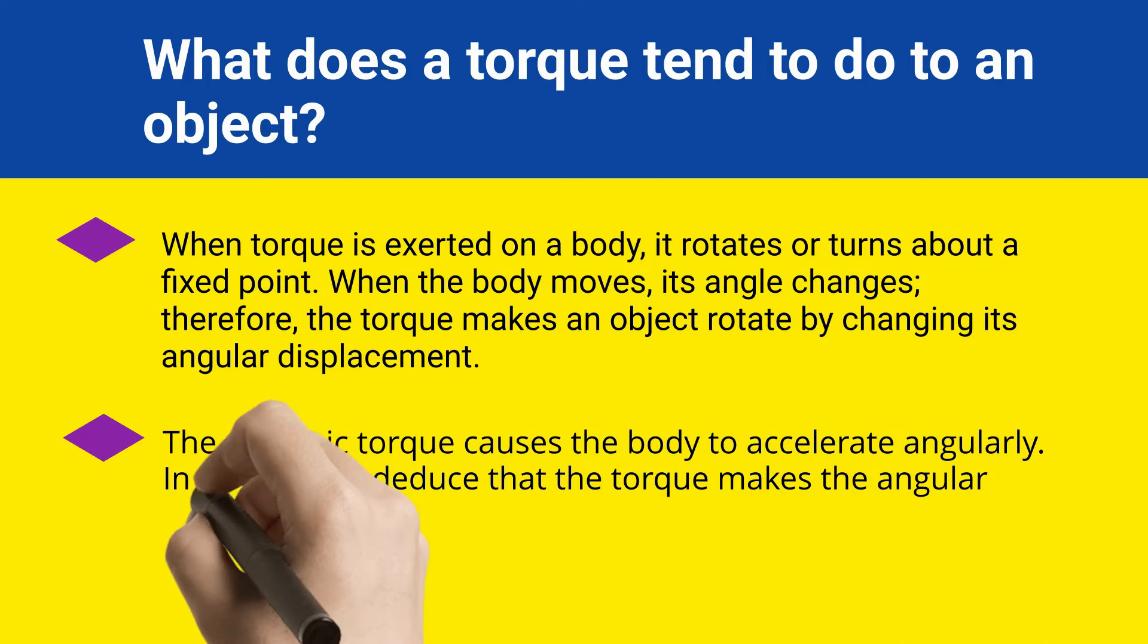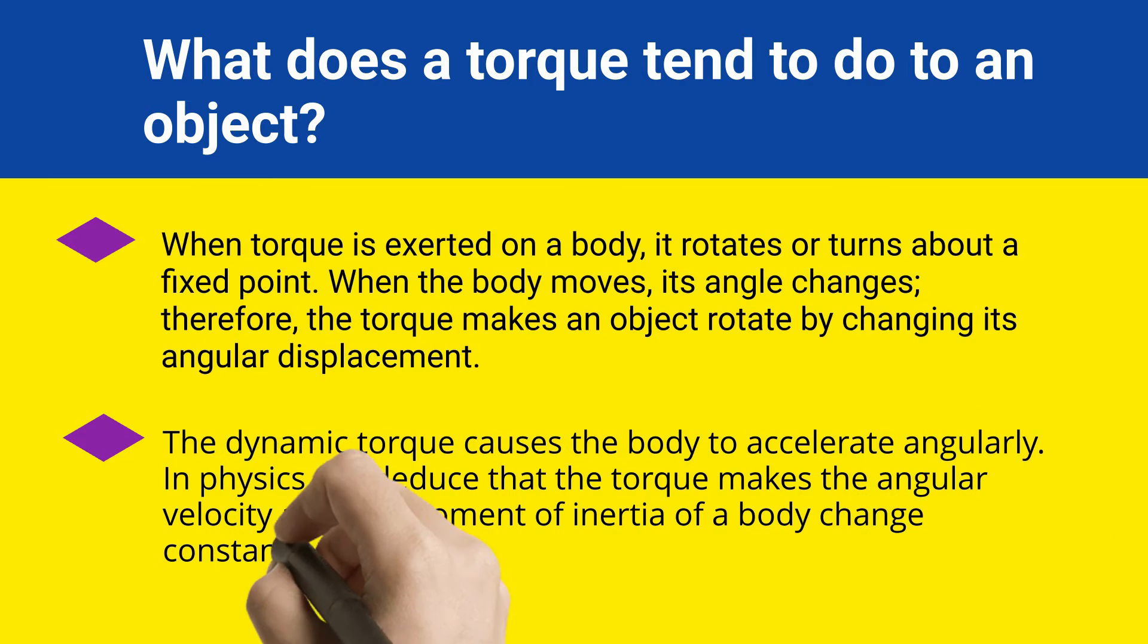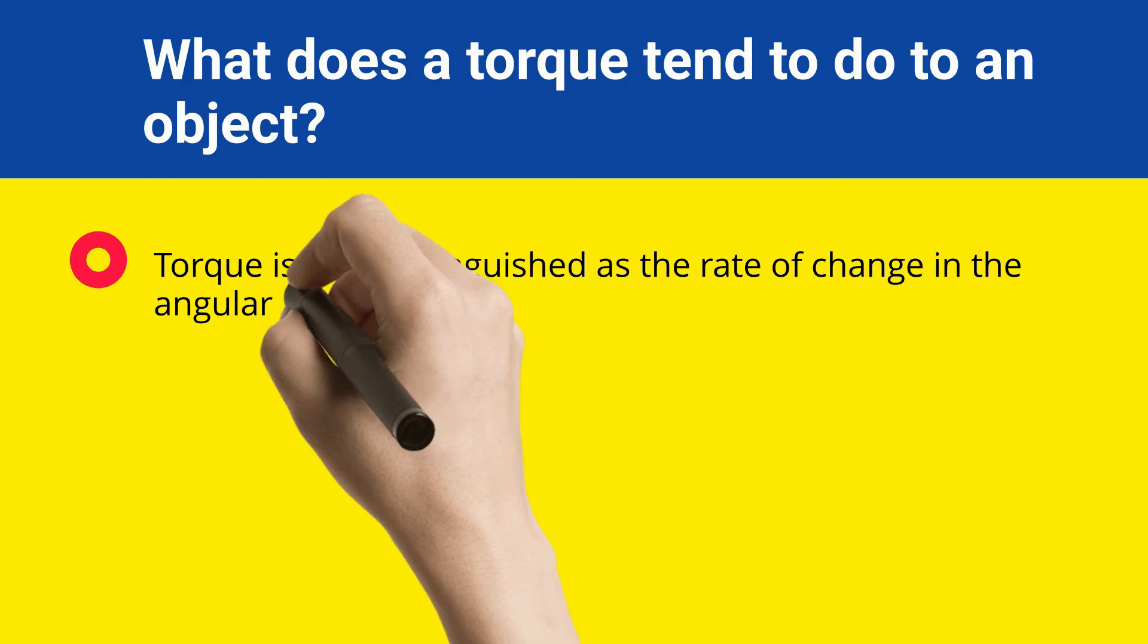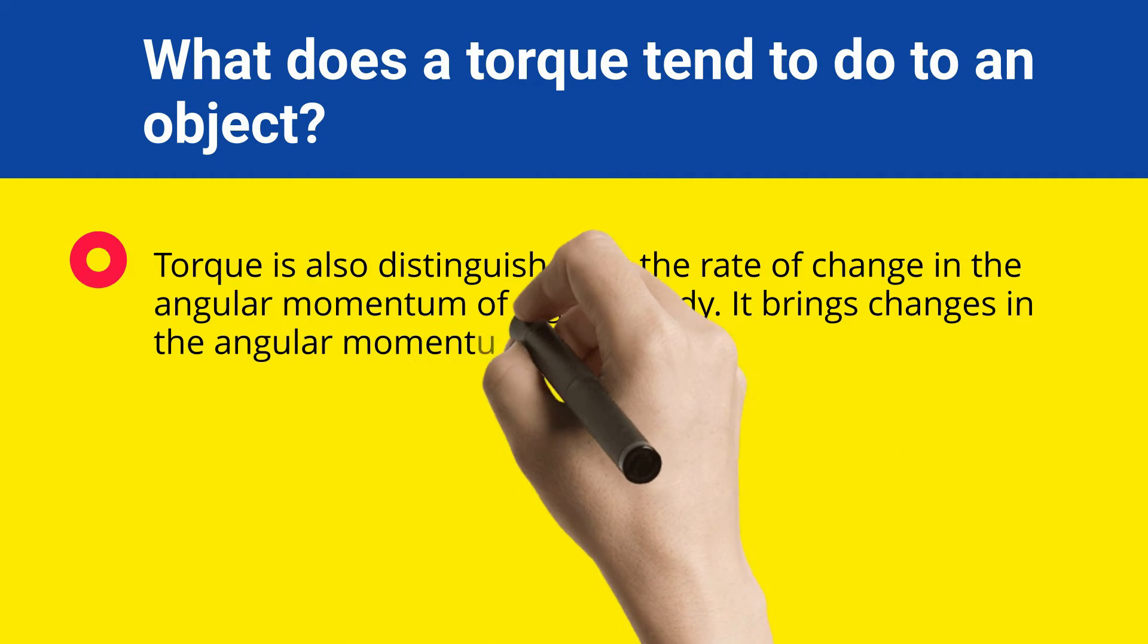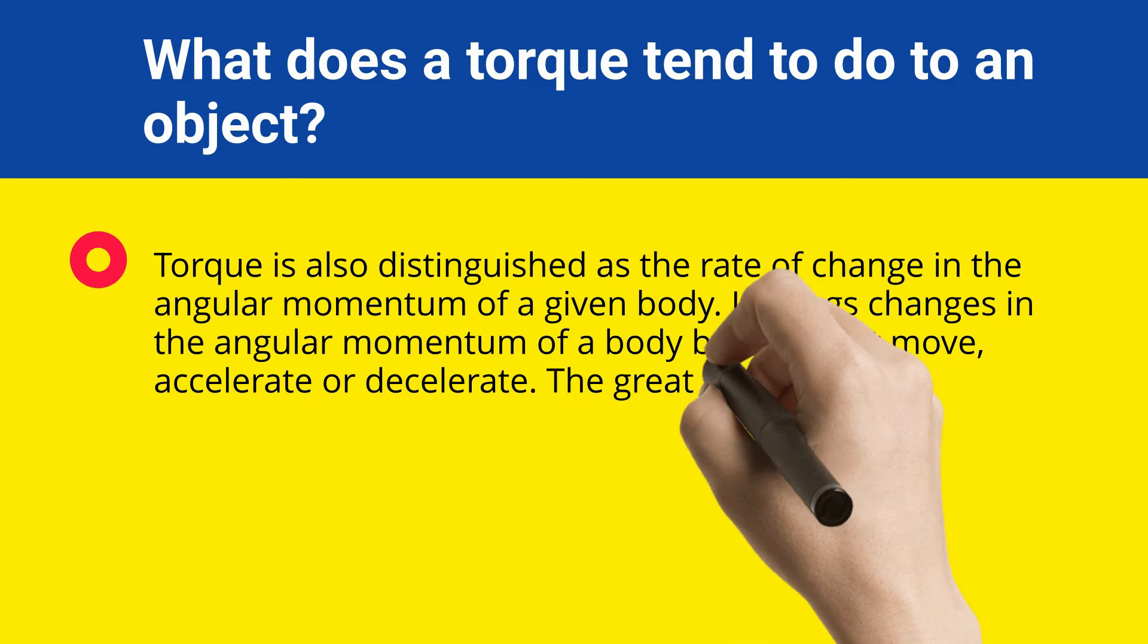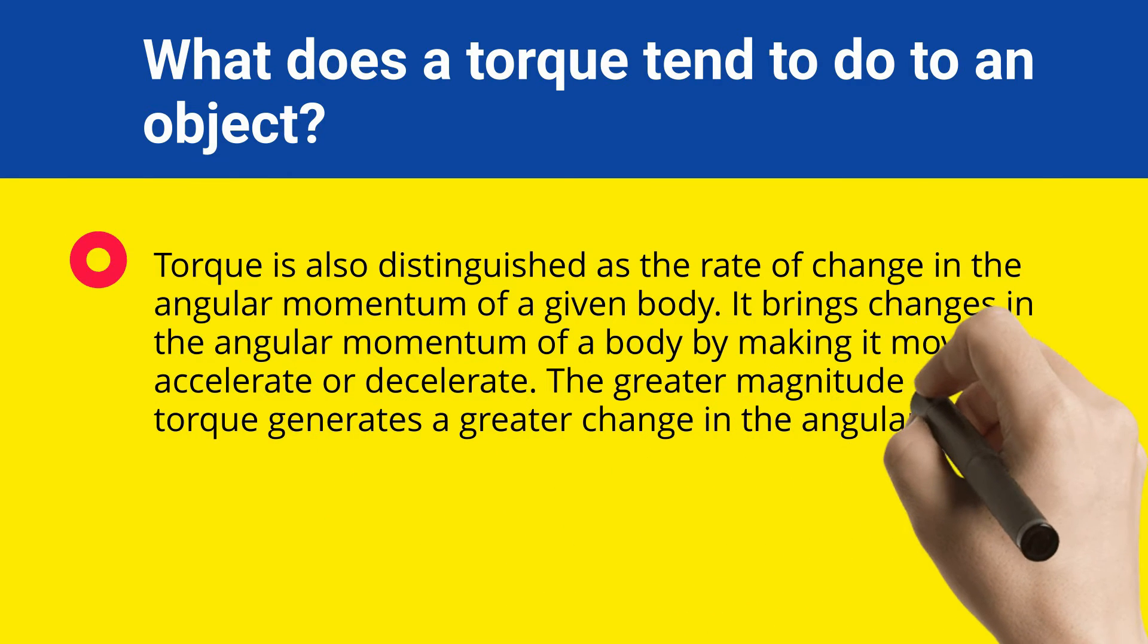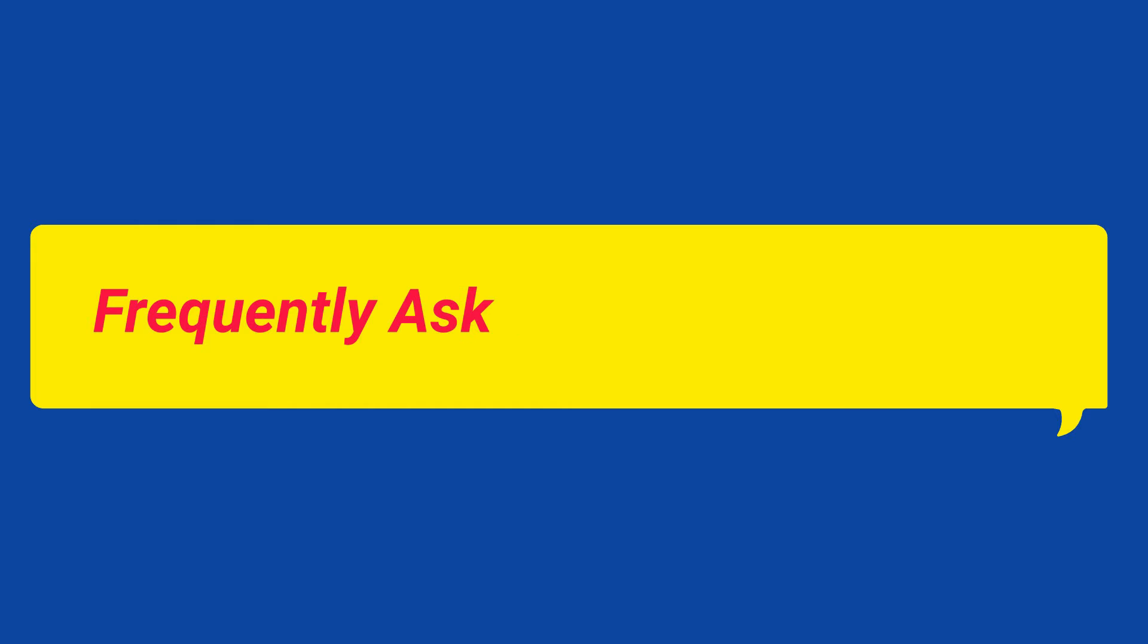In physics, we deduce that the torque makes the angular velocity and the moment of inertia of a body change constantly. Torque is also distinguished as the rate of change in the angular momentum of a given body. It brings changes in the angular momentum of a body by making it move, accelerate, or decelerate. The greater magnitude of torque generates a greater change in the angular momentum of a body.